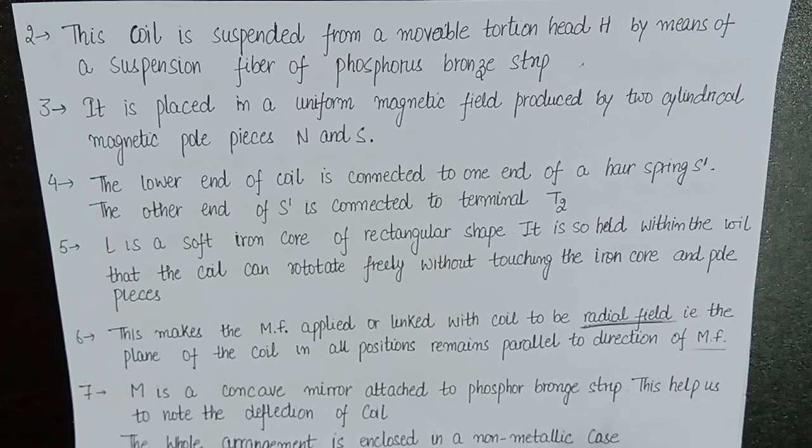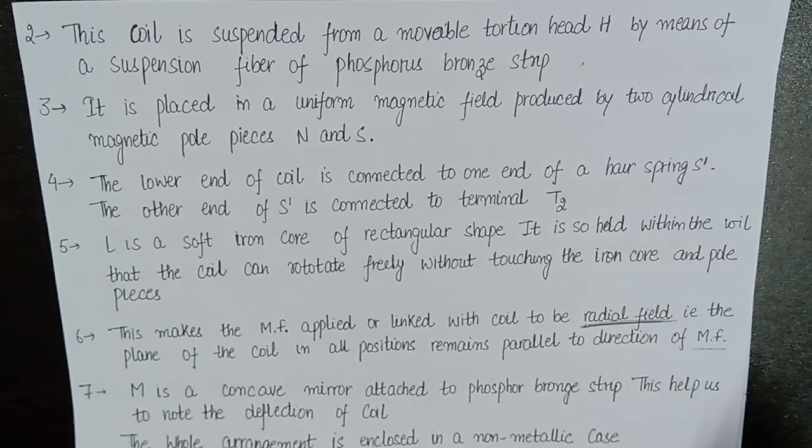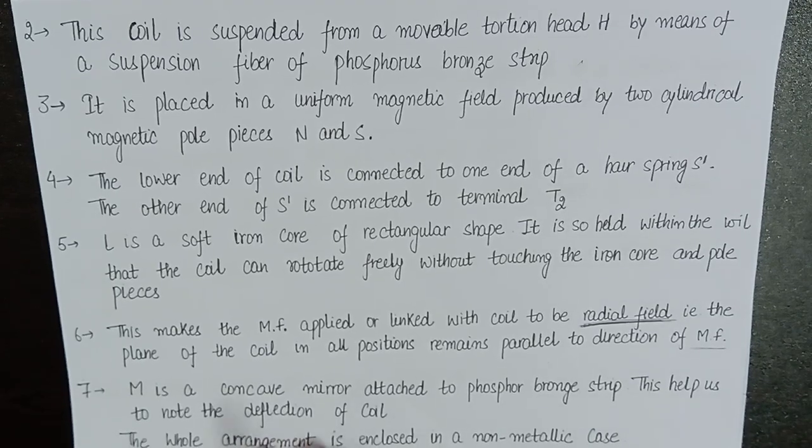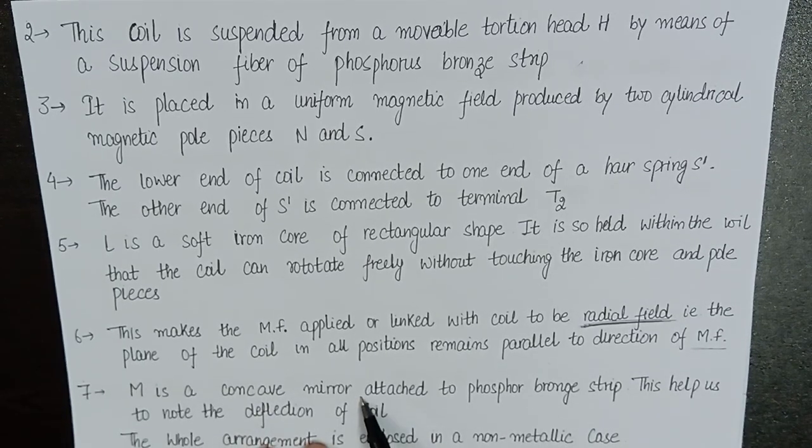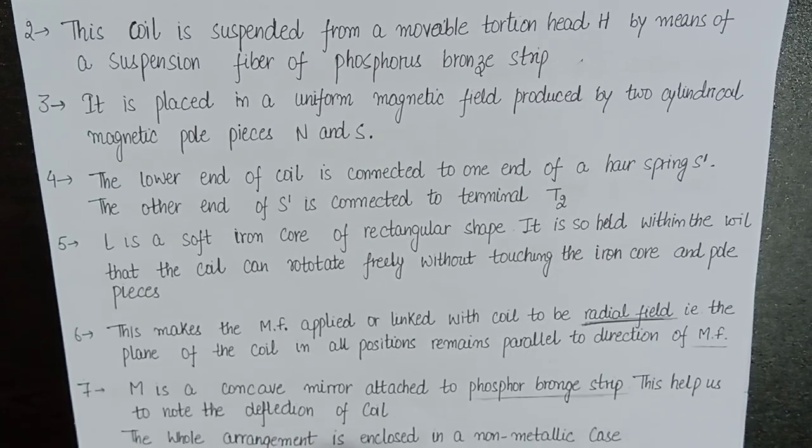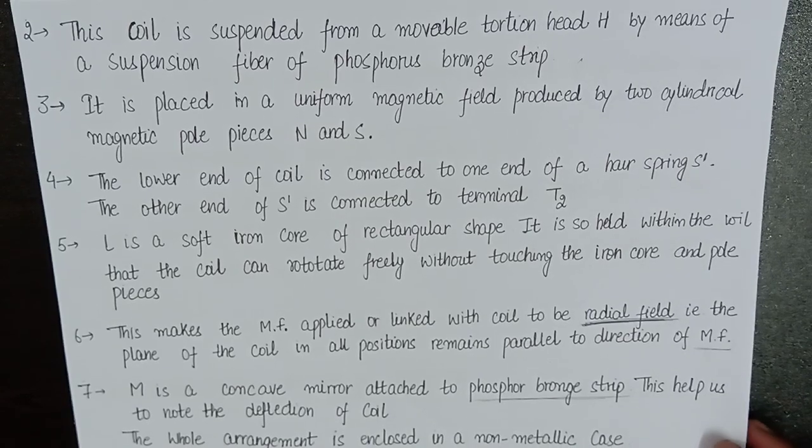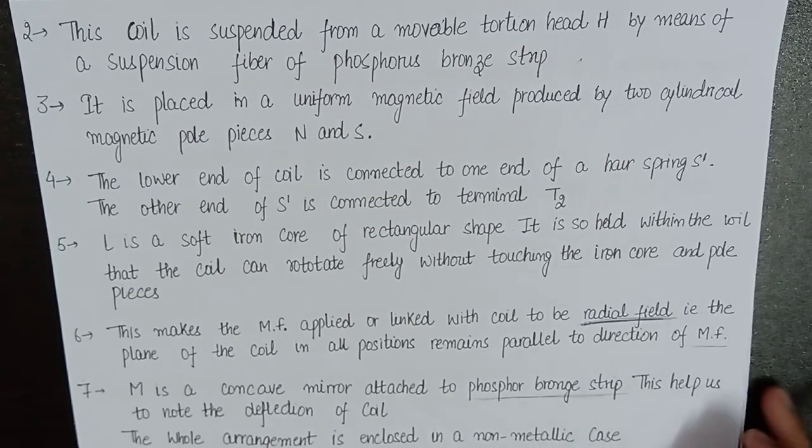Moreover, the second one is the soft iron core function of it is that the magnetic field radial. Now we will say the plane of the coil in all the positions remain parallel to the direction of the magnetic field. The M was our concave mirror, which we attached with a phosphorous bronze strip, which will help us to note the deflection of the coil. The whole arrangement is enclosed in a non-metallic case.